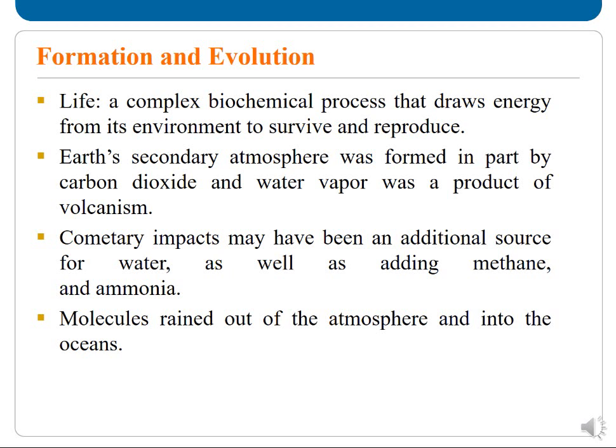Earth's secondary atmosphere was formed in part by carbon dioxide and water vapour as a product of volcanism. Cometary impacts may have been an additional source for water, as well as adding methane and ammonia. Molecules rained out of the atmosphere and into the ocean.